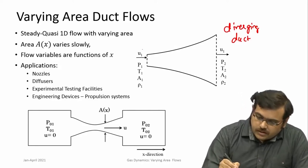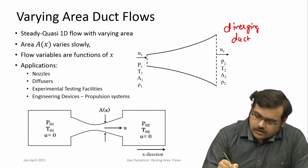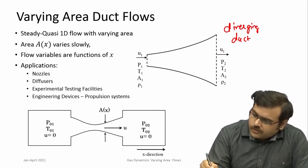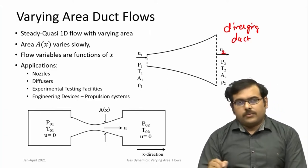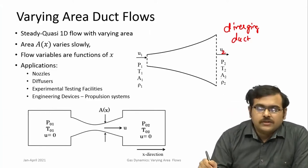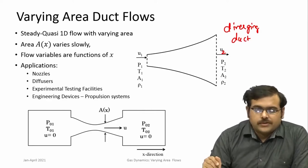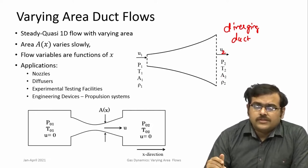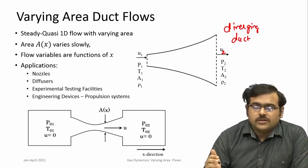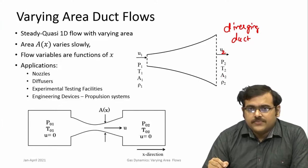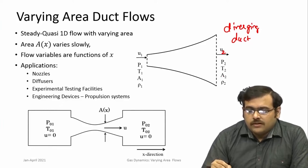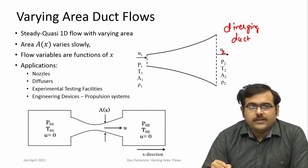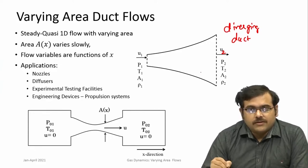We are interested in what happens to flow as it comes in and passes through a change in area, and what happens to the exit flow. A1 is changing to A2. Since there are no frictional forces or any heat addition or entropy-generating mechanisms, the flow is ideal and therefore isentropic. The entropy remains constant in these kinds of flows.